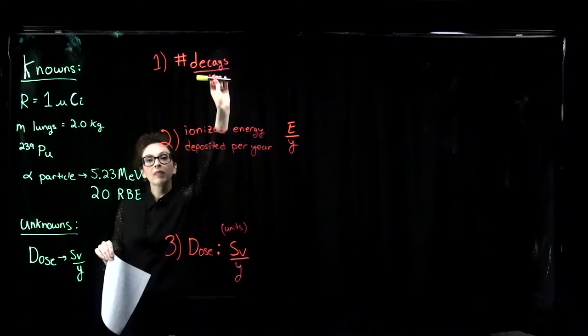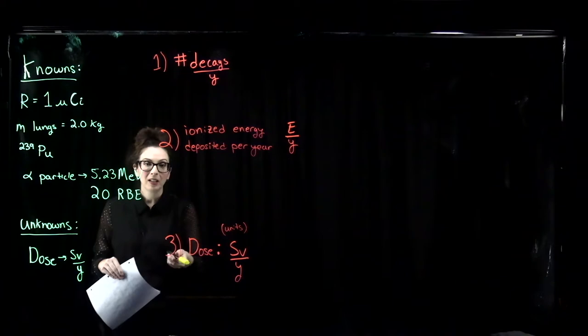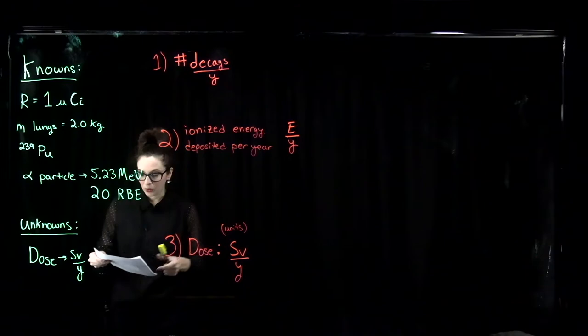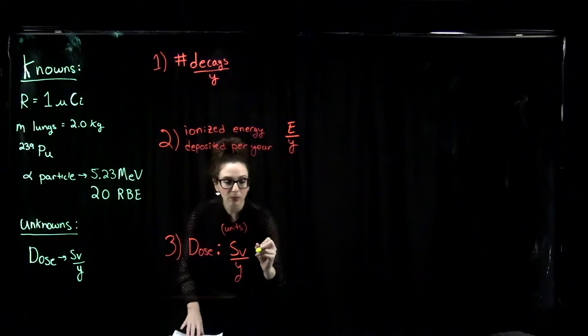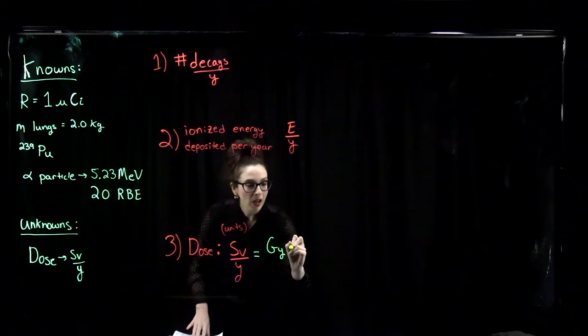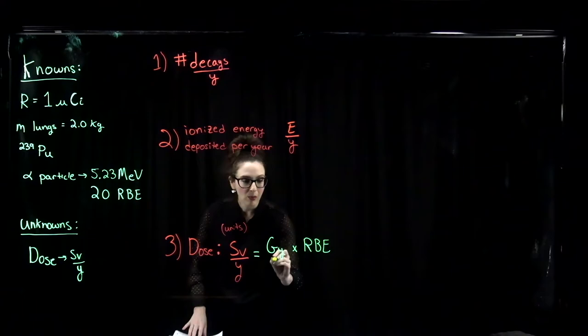There are three steps we need to take to solve this problem. Step three is where we want to go: find the dose in sieverts per year. The unit of sievert can be written as the unit of gray times the RBE, our relative biological effectiveness. This is the unit of sievert, but we have to find this per year.